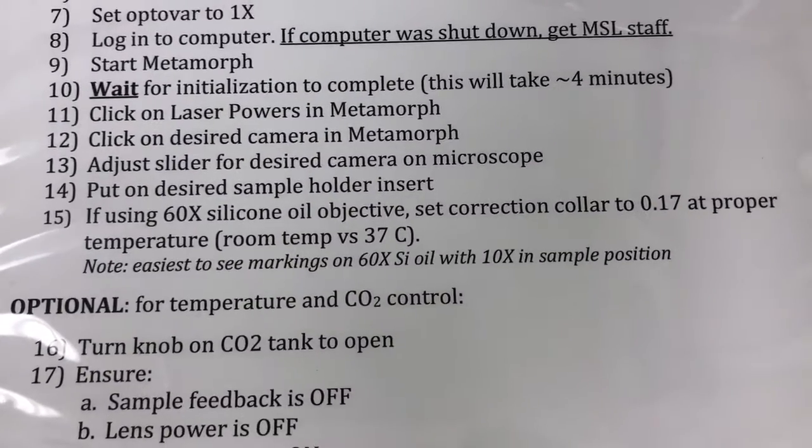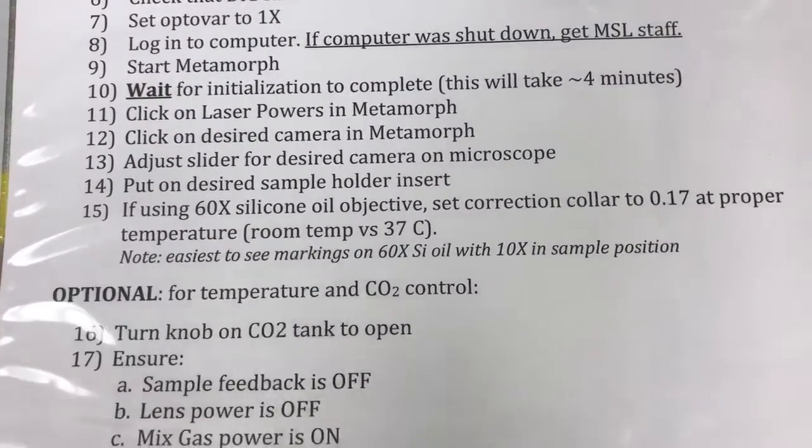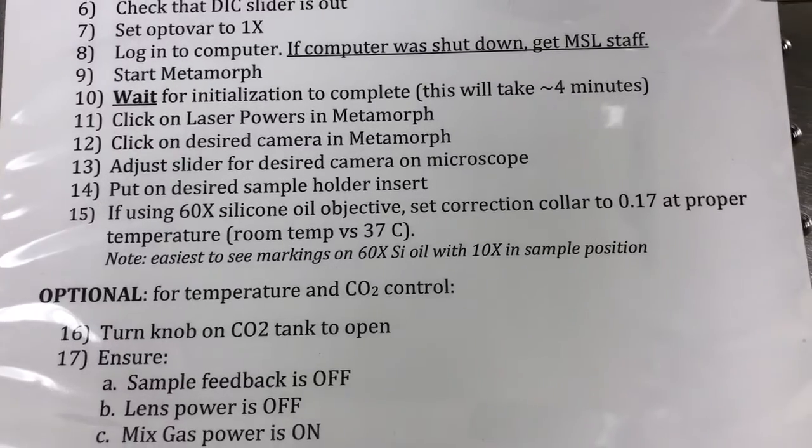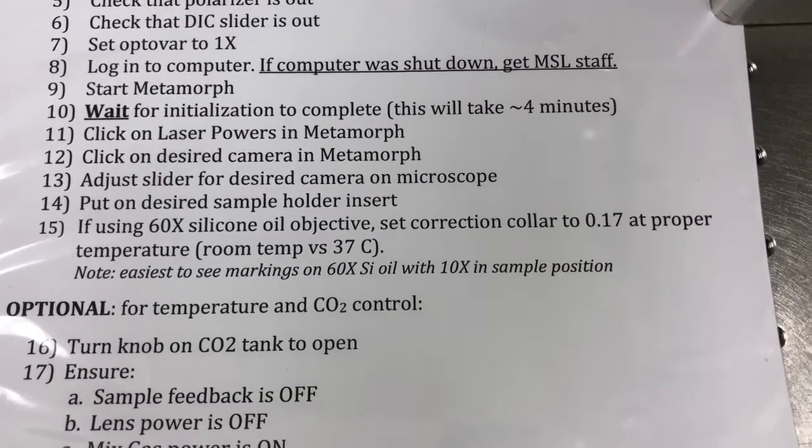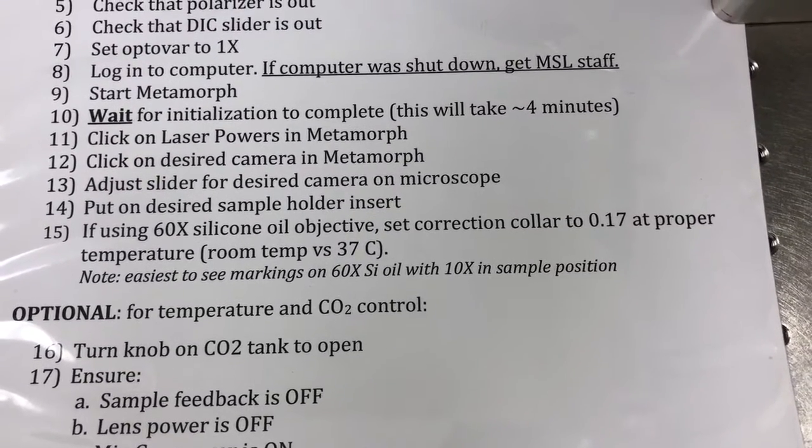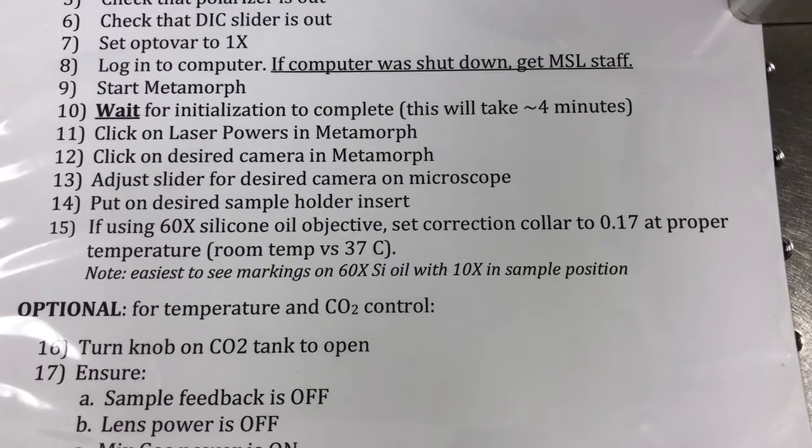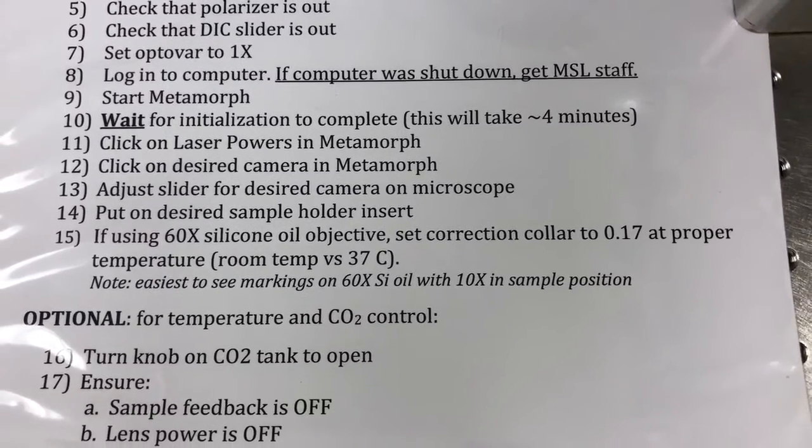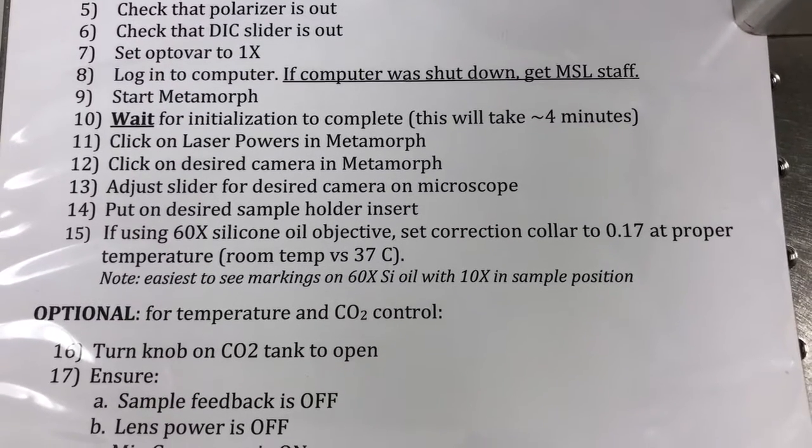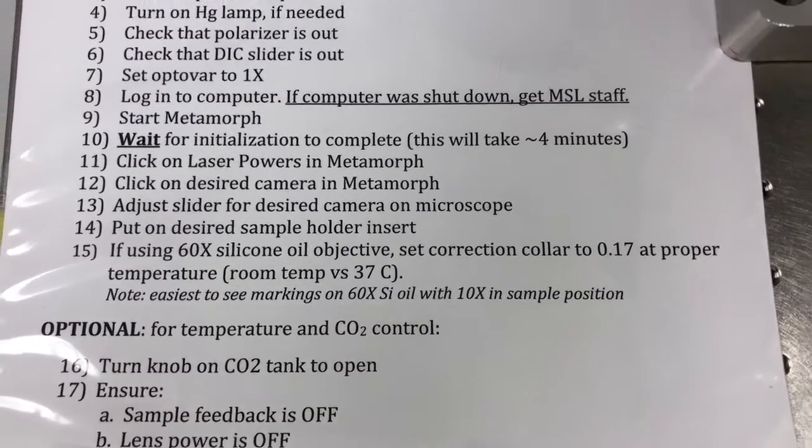The next step, 15, is if using the 60x silicon oil objective, set the correction collar to 0.17 at the proper temperature, which can be either room temperature or 37 degrees Celsius. It has a note that it's easiest to see the markings on this objective with the 10x in the sample position.